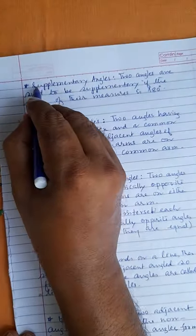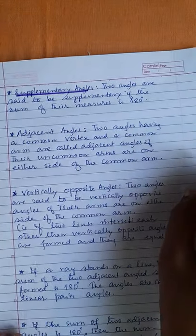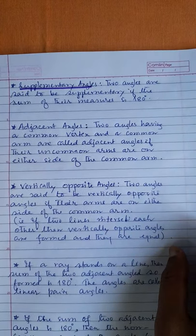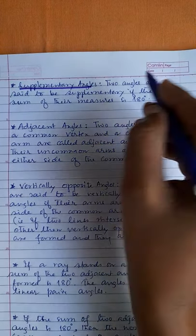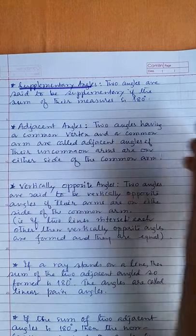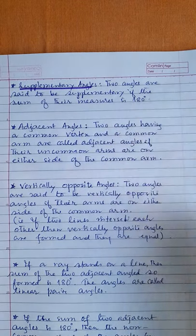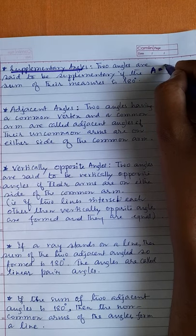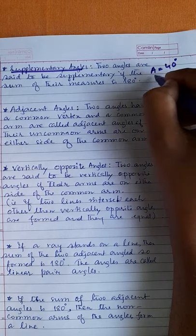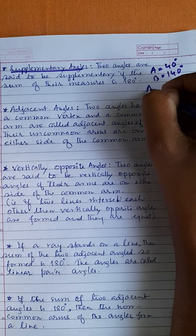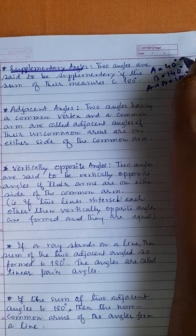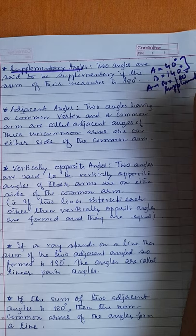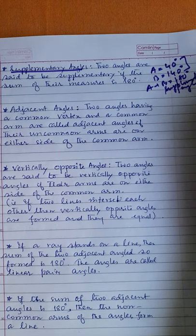Next is supplementary angles. Two angles are said to be supplementary if the sum of their measures is 180 degrees. Suppose angle A is 40 degrees and angle B is 140 degrees — then A plus B equals 180 degrees, so they are called supplementary angles.